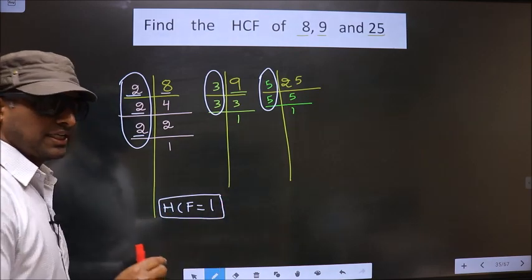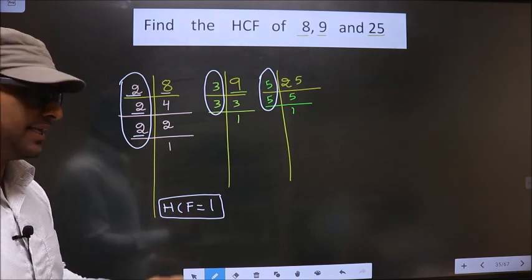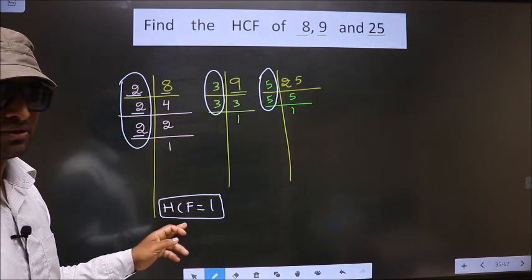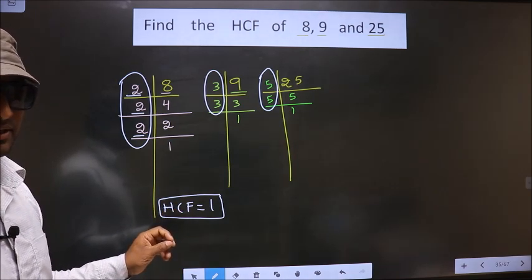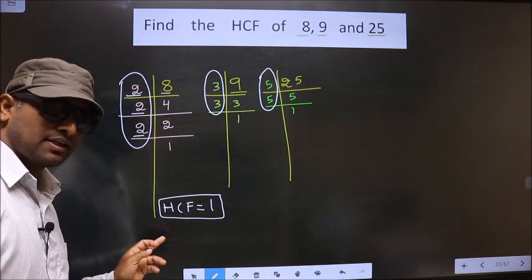Whenever no number is present in all three places, we should take the HCF to be 1. Always. Okay. Am I clear?